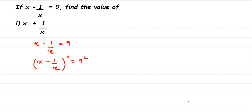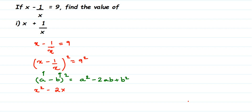9 square is 81. On the left side we have something minus something whole square — it's like a minus b whole square. So we use the identity: a minus b whole square is equal to a square minus 2ab plus b square. In place of a we have x, in place of b we have 1 by x. Substituting: x square minus 2 into x into 1 by x plus 1 by x whole square is equal to 81.